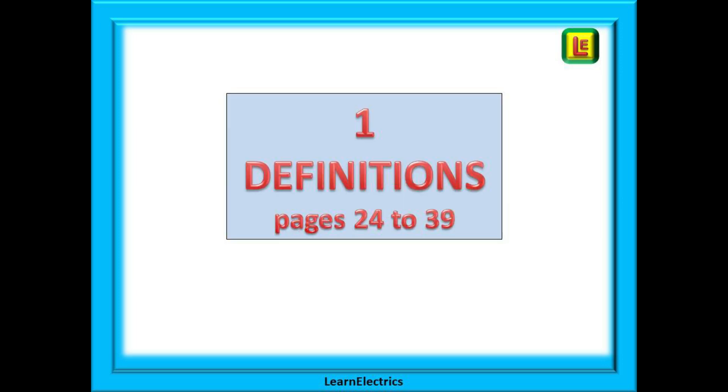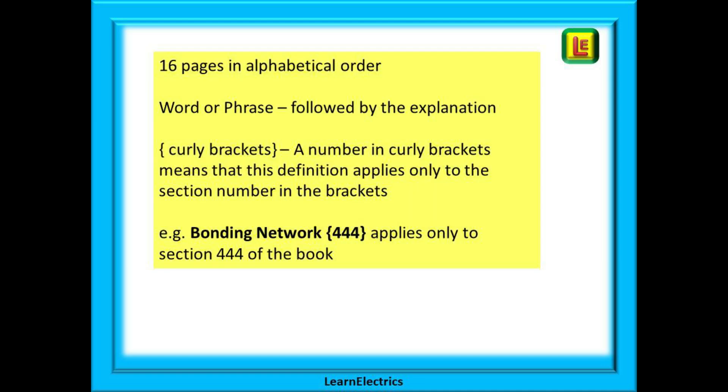We can begin with the first section, the definition of keywords and phrases on pages 24 to 39. This first section of 16 pages is in alphabetical order. A keyword or phrase will be shown followed by an explanation of what it means in relation to electrical wiring. Please take the time to go through this section. There will be times when knowing how to use this information is going to be really useful.